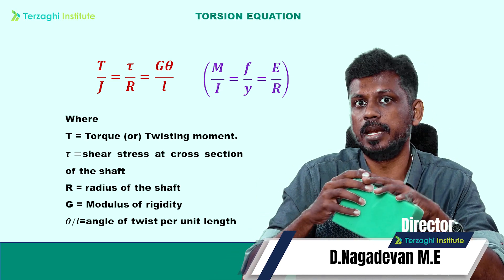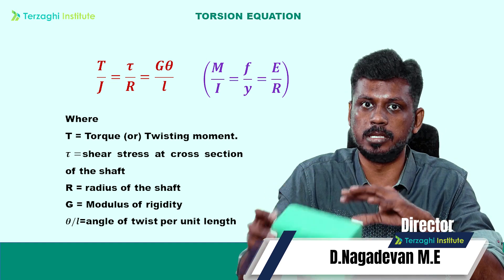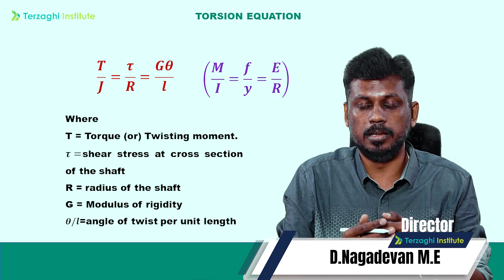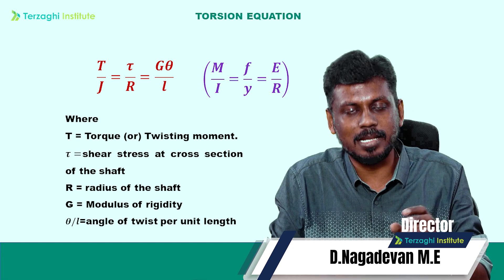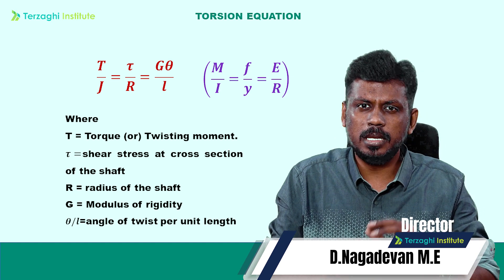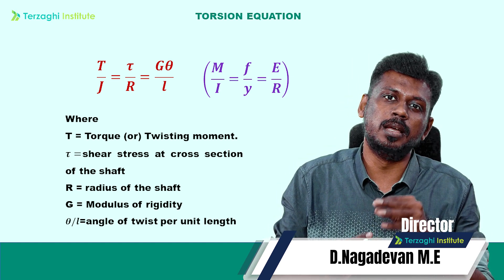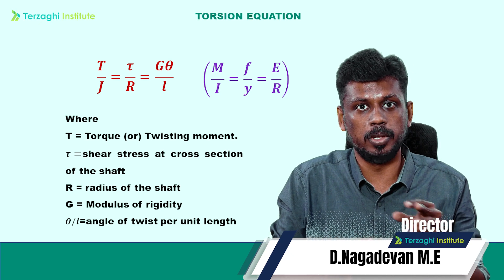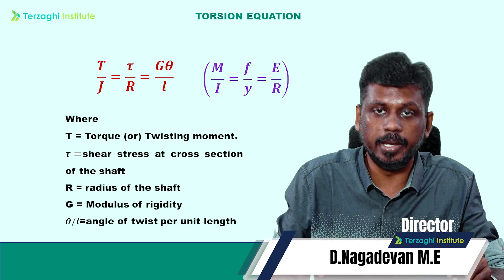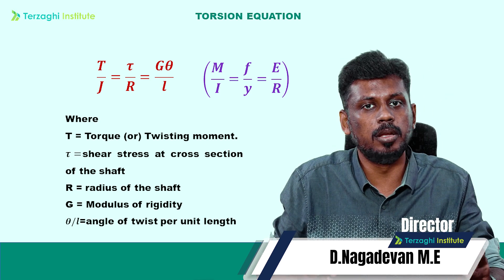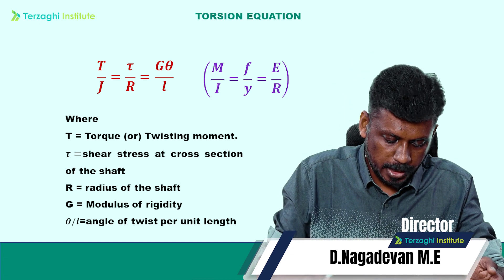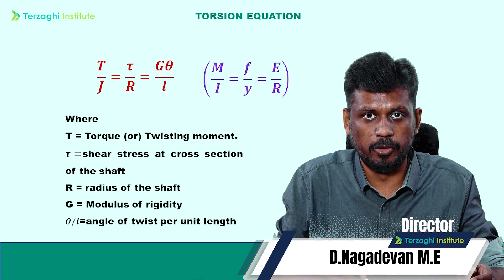For a circular section, using the torsion equation we can solve simple problems by direct substitution. The angle of twist per unit length is theta by L. For a solid shaft, the polar moment of inertia J equals πD⁴ by 32.